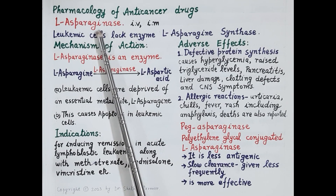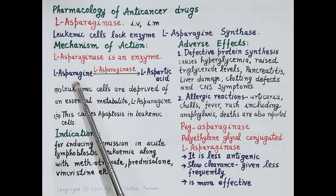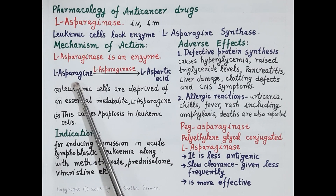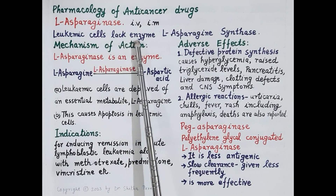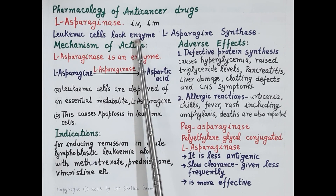Now let's understand the pharmacology of L-asparaginase. L-asparagine is an amino acid required for the synthesis of proteins. Healthy cells of the body can synthesize L-asparagine with the help of the enzyme L-asparagine synthase. Leukemic cells, however, lack this enzyme and cannot synthesize sufficient amounts of L-asparagine.